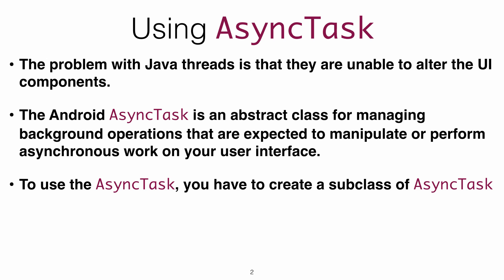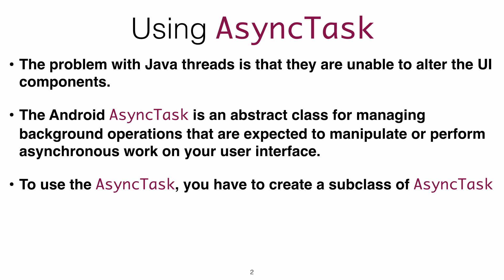To use AsyncTask, you have to create a subclass — you actually have to subclass AsyncTask. There are three generic types you must define when extending AsyncTask. The first is the Parameters type, which is the type of the parameters to be sent to the background task.